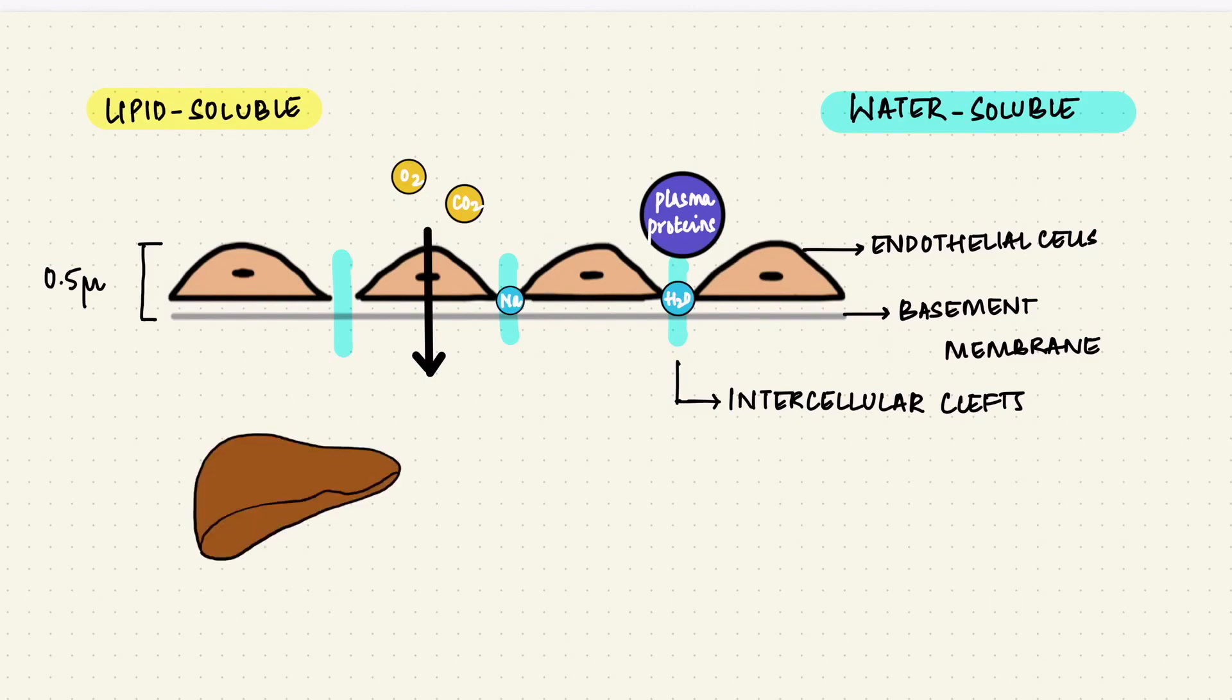There are exceptions to this, like the hepatic sinusoids, where the spaces are large enough for plasma proteins to pass through.